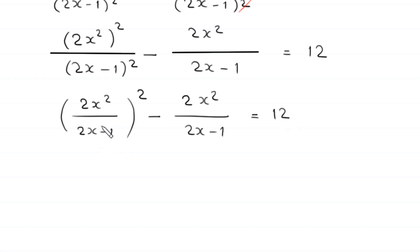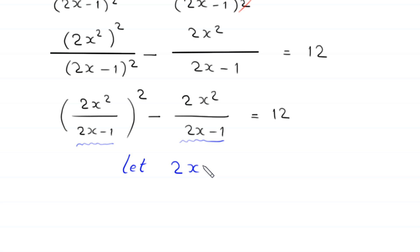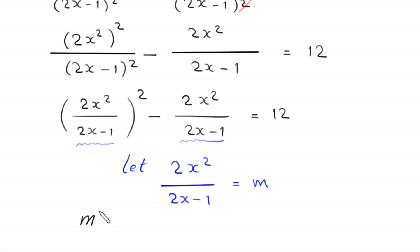Inside the expression we have the same term 2x squared over (2x minus 1) appearing twice. So we let m equal 2x squared over (2x minus 1) and substitute into the equation, giving m squared minus m equals 12.